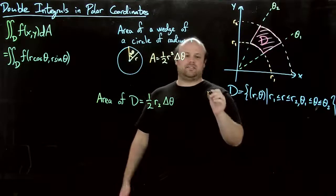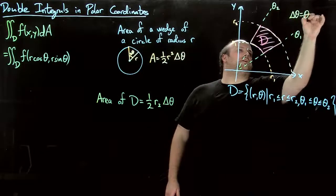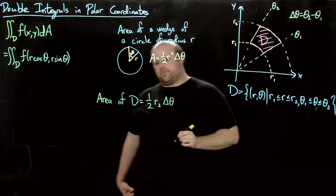So we're going to have one-half r squared delta theta. Where here delta theta is theta two minus theta one.